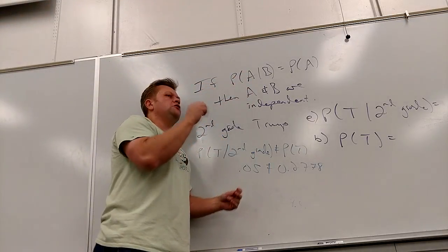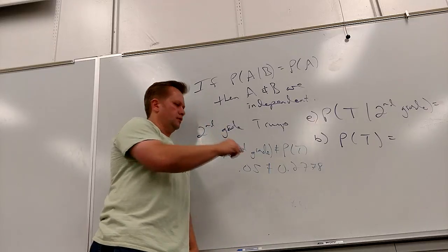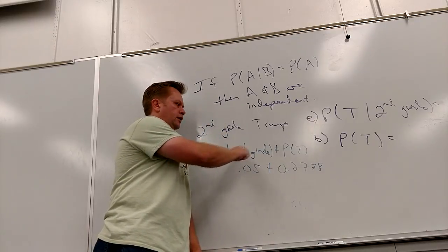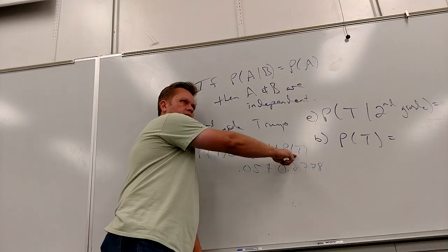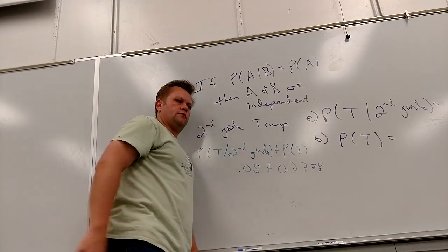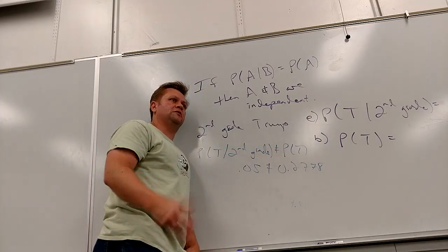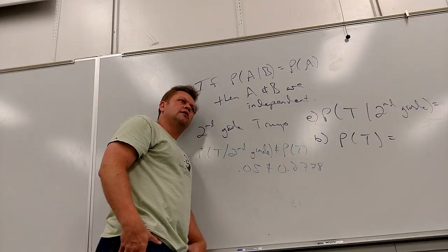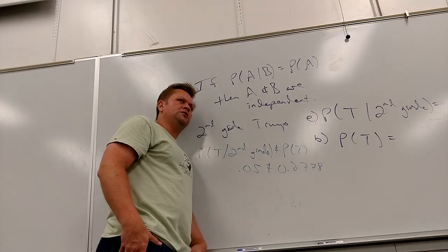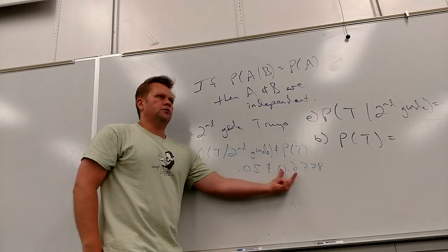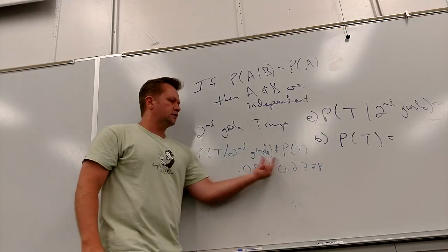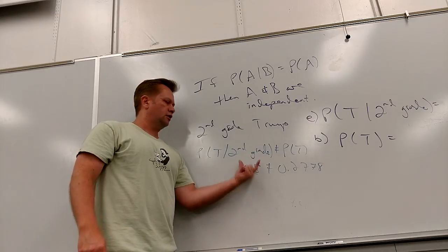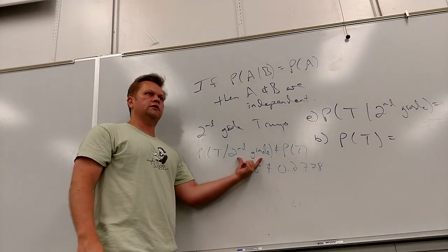How can you tell if they're independent? If the given probability is the same as what it used to be. If they're not the same, therefore they're not independent — they're dependent. Since the probability of Trump changed given that they were in second grade, they are dependent.